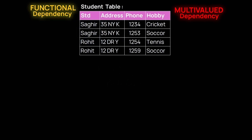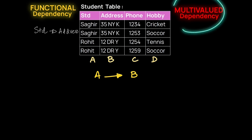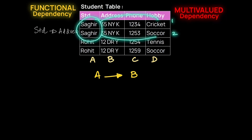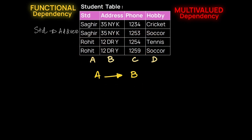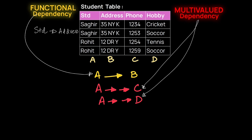Let's label our table with A, B, C, and D. Functional dependencies are shown with one arrow between two attributes — A is functionally dependent on B, meaning a student has one address. Now for multivalued attributes: student Sagir has multiple phone numbers and multiple hobbies, and Rohit also has two phone numbers and two hobbies. This one-to-many relation is shown with two arrows. C is a multi-value of A and D is a multi-value of A — two arrows signify multi-value.